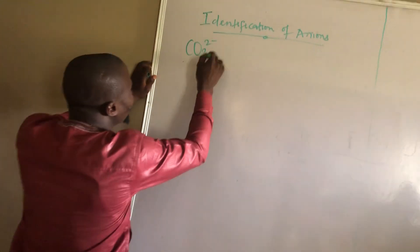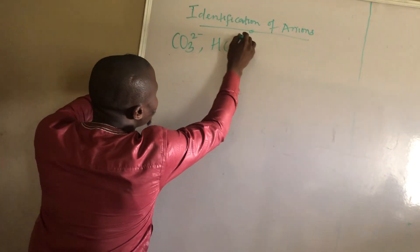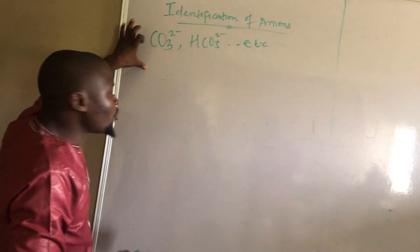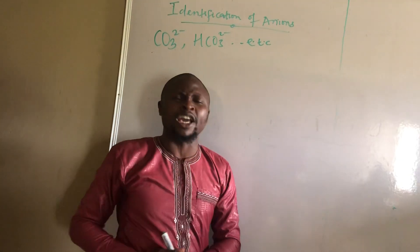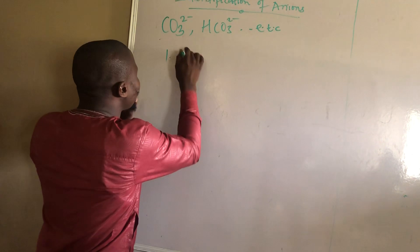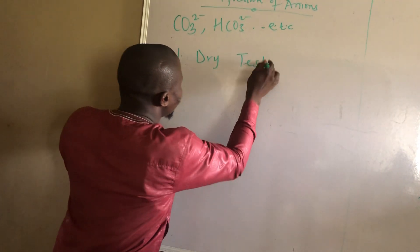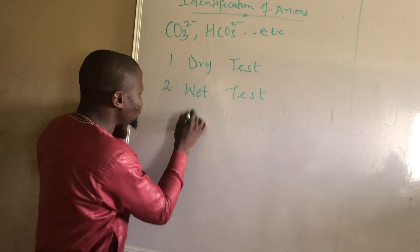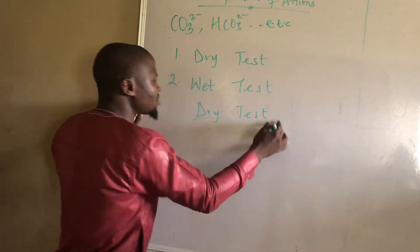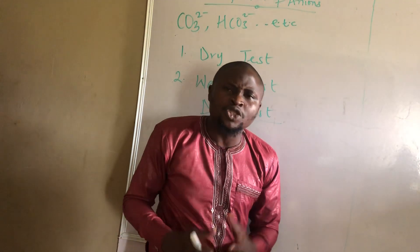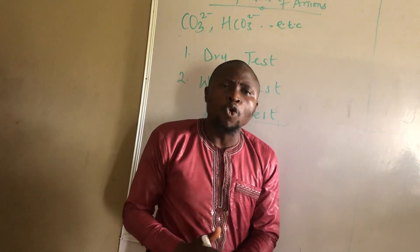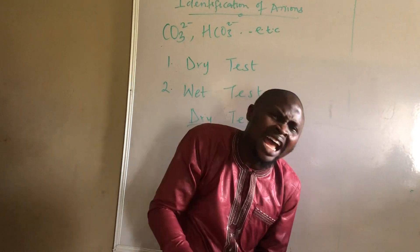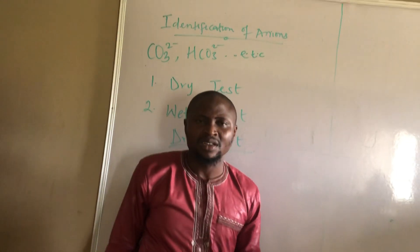Of course, anions come in different types — we have trioxocarbonate and so on. To describe anions, there are two methods. The first one we call the dry test and the second one we call the wet test. Today we want to look at the dry test. Dry test simply means heating the salt — the unknown substance — so that there is an effervescence of a gas. From the gas that evolved, we can then describe the anion present.